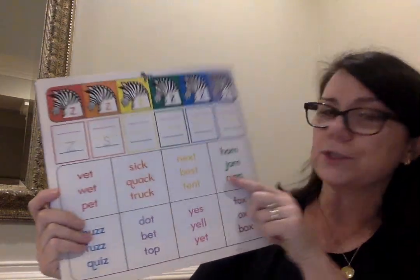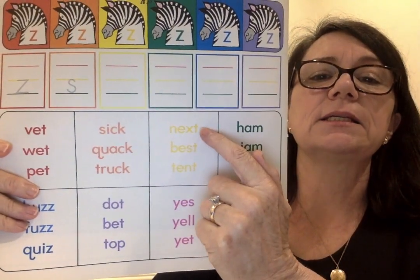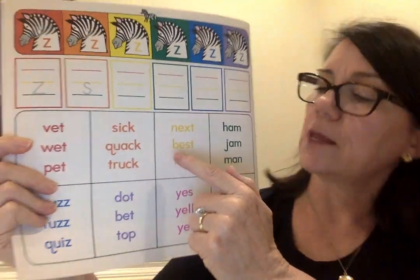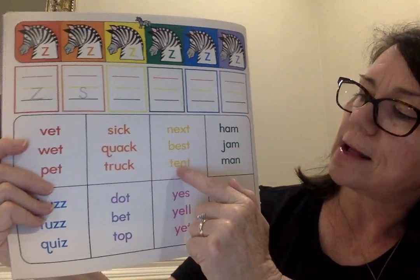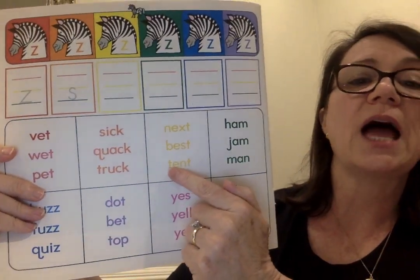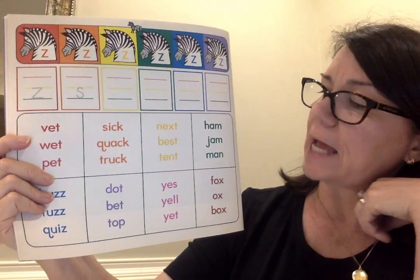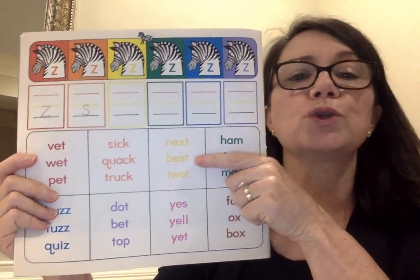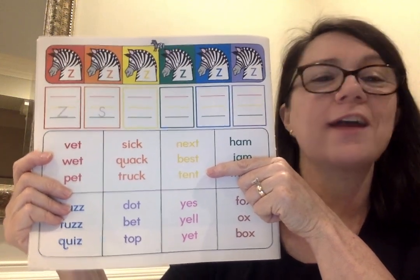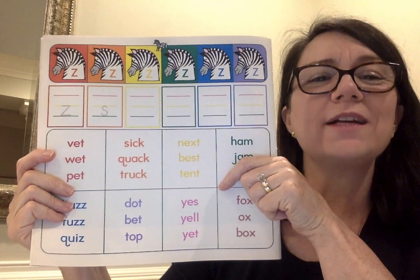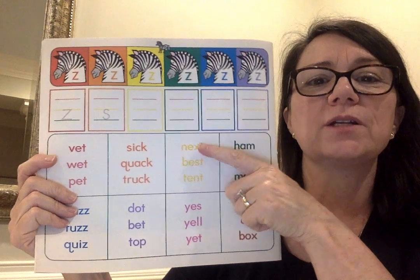Moving on to our yellow words. The first one is next, the next one is best, and the last one is tent. So we've got next, best, and tent. I want you to circle the word next. What is your beginning sound in next? Look at those words and find the word next and circle it.